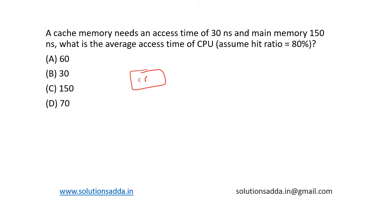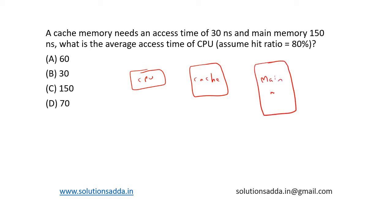Here we have the CPU, next to the CPU we have the cache, then we have the main memory. This is how the organization is. The cache hit percentage is equal to 80 percent.